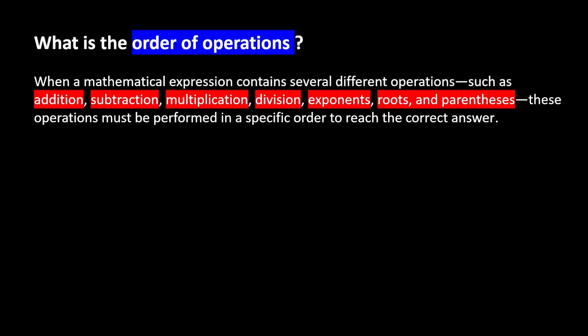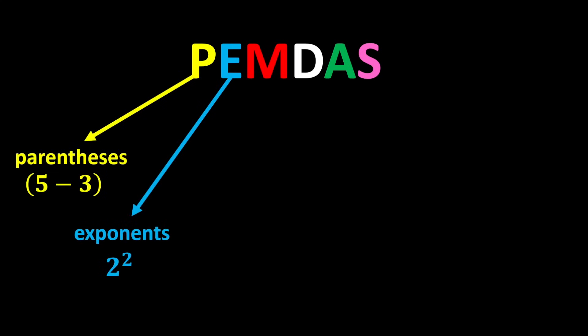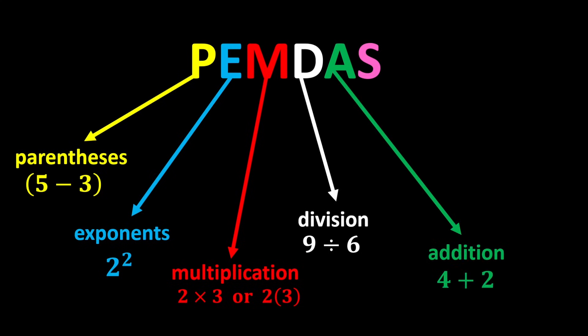The correct order of operations is known by a short and abbreviated expression called PEMDIS. P stands for parentheses. E stands for exponents. M stands for multiplication. D stands for division. A stands for addition. And S stands for subtraction.